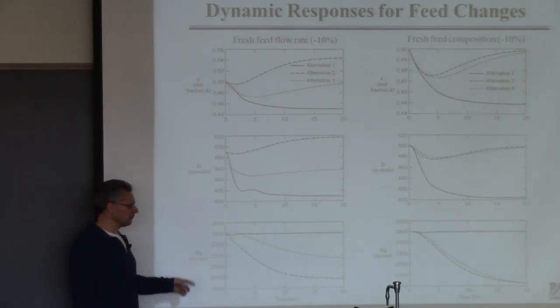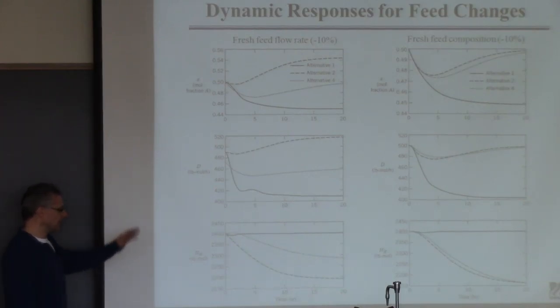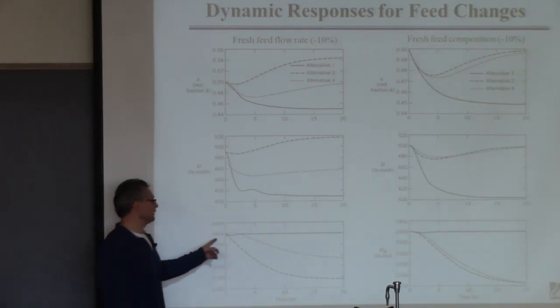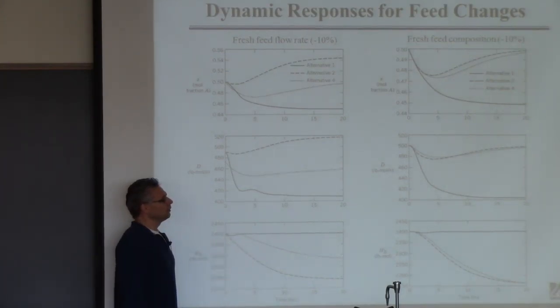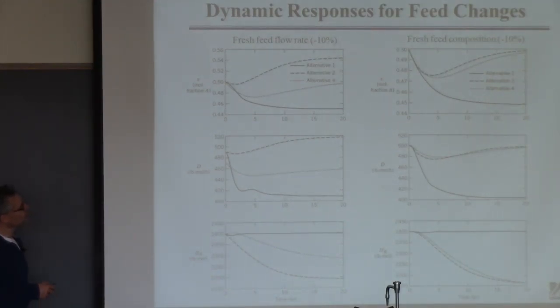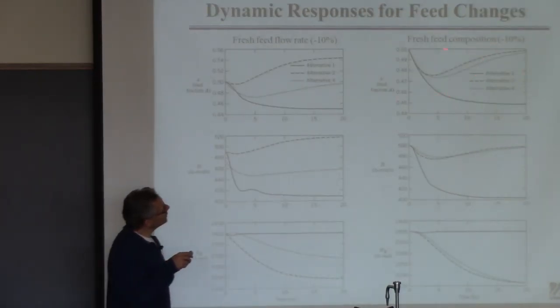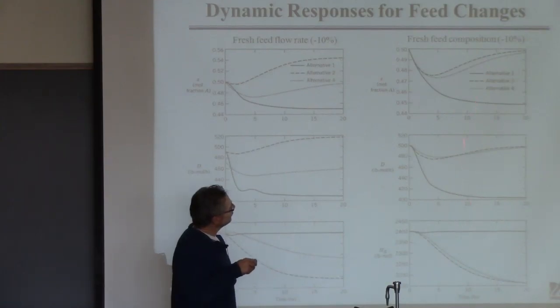And here you can really see it in the reactor level. If you use scheme four, this was the ultimate scheme I came up with, it has almost no sensitivity in the level to this disturbance, while these other things have sensitivity, especially this one. Wait a minute, this is the opposite. I lied, alternative one in this case is the least sensitive and these guys are more sensitive. So what do you learn from this? You learn that no matter what you do there's going to be some sensitivity. It's just a question of where you want to put it and how much it's going to be.